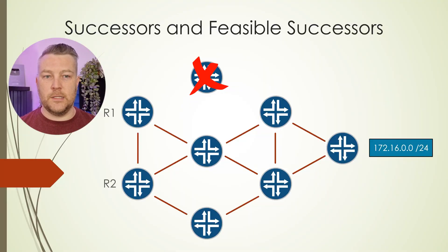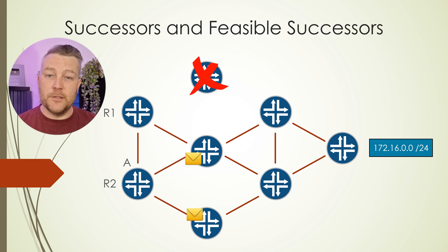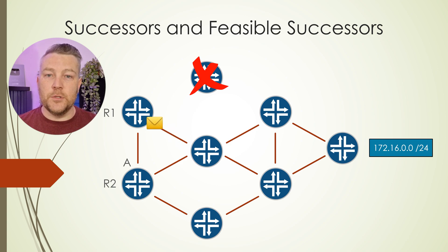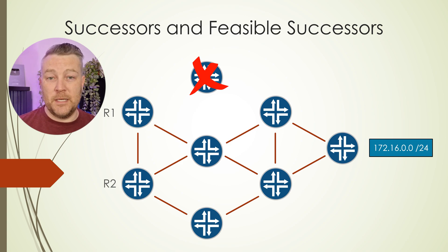There are various ways a router may respond once it receives a query. If the query came from a router that already has the successor route to this network, then the receiving router will mark its own route as active and send the query downstream to other routers. If the query did not come from a successor, the receiving router will ignore the infinite delay, meaning it already knows of another path and will share that information. Or if it doesn't know about another route, it will immediately respond saying it doesn't know.